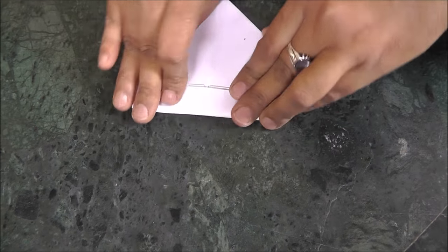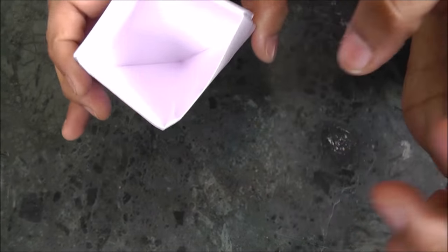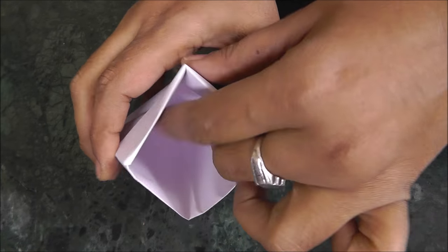Fold the rectangular portion into half which we have pulled backwards. We are folding it into half and again pulling it. Now, wow, the simple and beautiful cap is ready. If you want, you can fold it in paper and put it on the backward side.